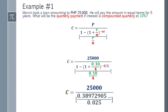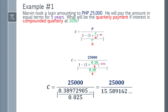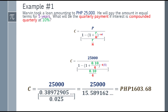For the bottom part, R over N: we have 0.10 over 4, which simplifies exactly to 0.025. Simplifying further, you have 25,000 over that one fraction. Dividing 0.38972905 by 0.025 gives 15.589162 and so on. And lastly, to get the final answer: 25,000 divided by 15.589162 gives an answer of 1,603.68.